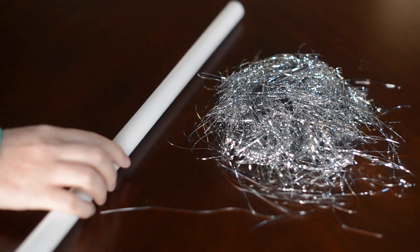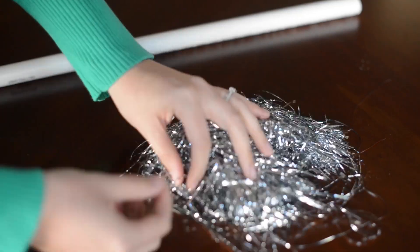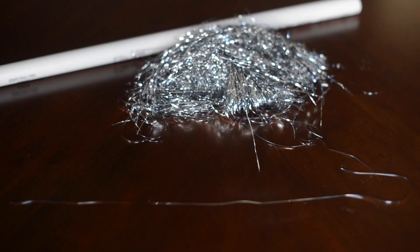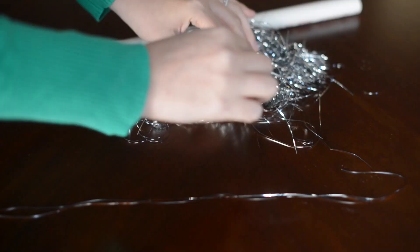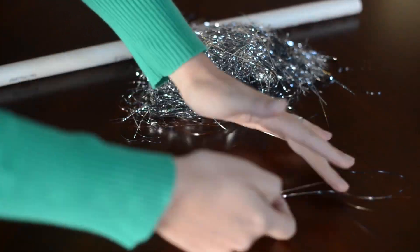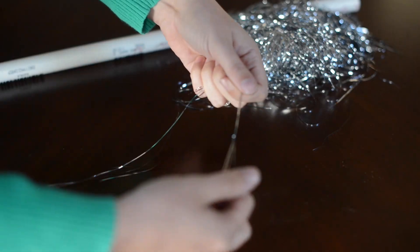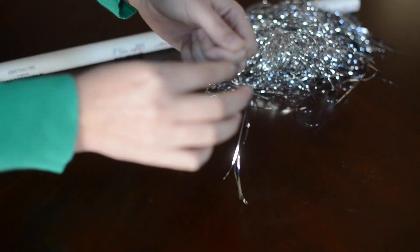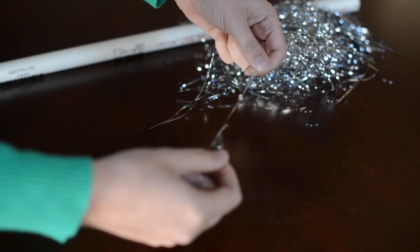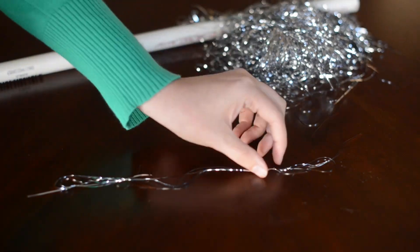All you need for this is a piece of PVC pipe and some Christmas tinsel. Take three to six strands of tinsel and tie them together on each end, about six inches apart. And then you cut off the excess on the end.